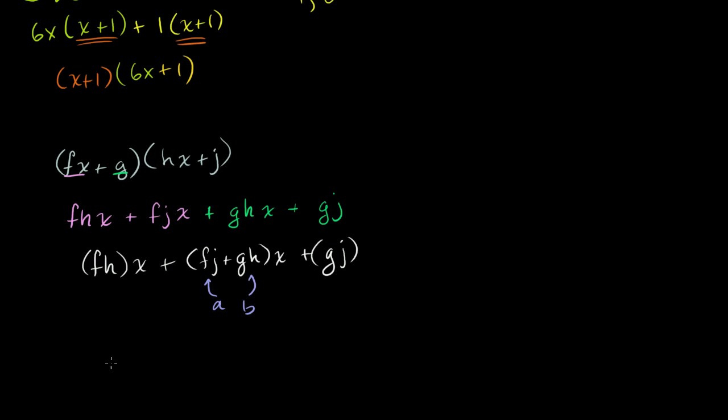And then what is a times b? a times b is going to be equal to fj times gh, which we could just reorder these terms. We're just multiplying a bunch of terms. So that could be rewritten as f times h times g times j. These are all the same things. Well, what is fh times gj? This is equal to fh times gj. Well, this is equal to the first coefficient times the constant term. So a plus b will be equal to the middle coefficient. And a times b will equal the first coefficient times the constant term. So that's why this whole factoring by grouping even works, or how we're able to figure out what a and b even are.